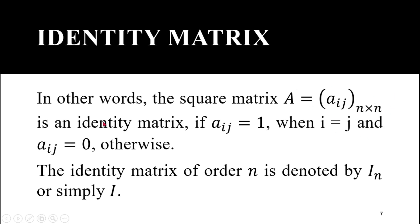Formally, a square matrix A equal to a_ij with n rows and columns is an identity matrix if a_ij equals 1 when i equals j — meaning all diagonal elements are equal to 1 — and a_ij equals 0 otherwise, meaning all non-diagonal elements are 0. Such a matrix is called an identity matrix.